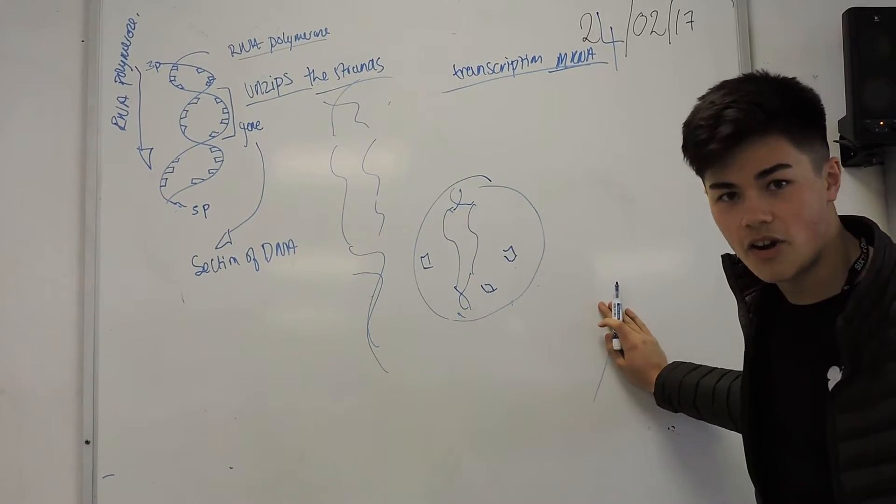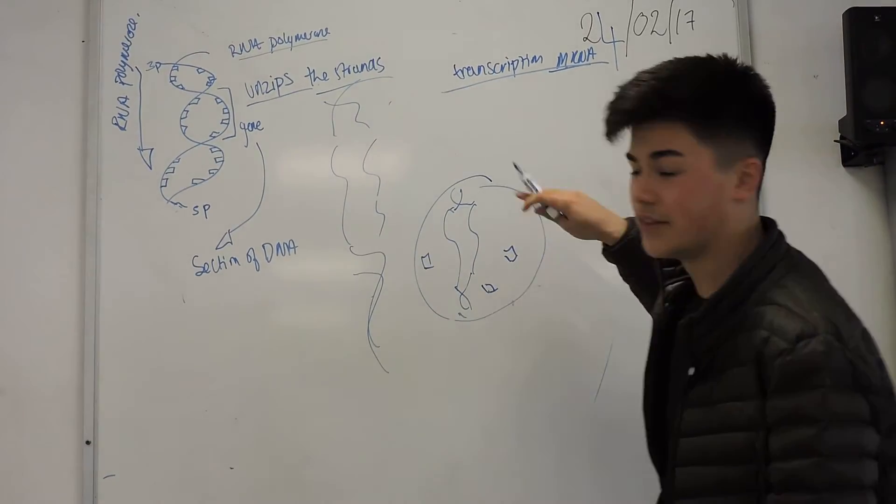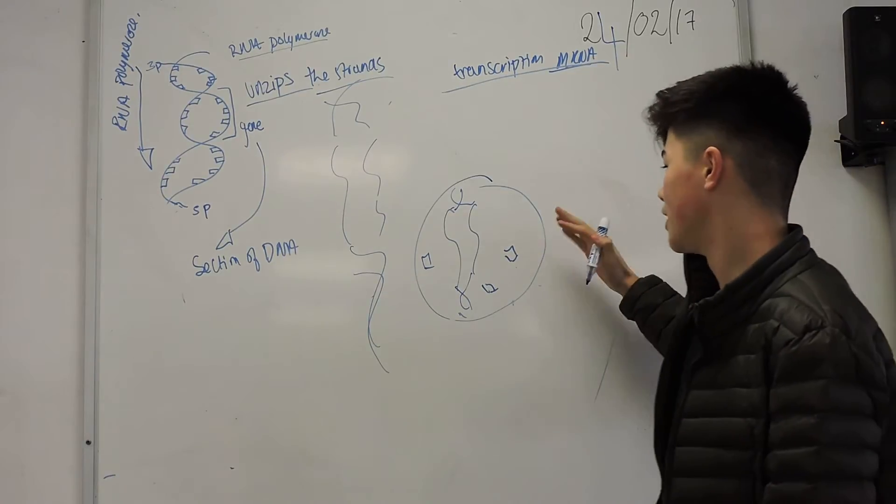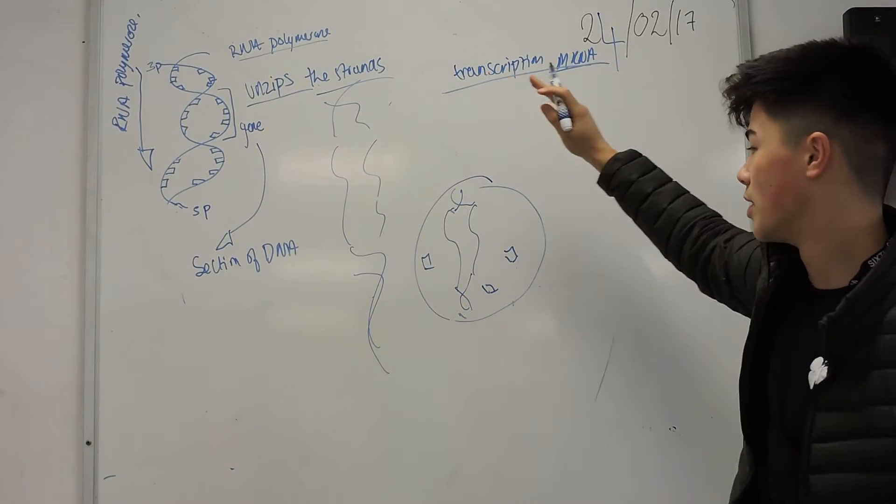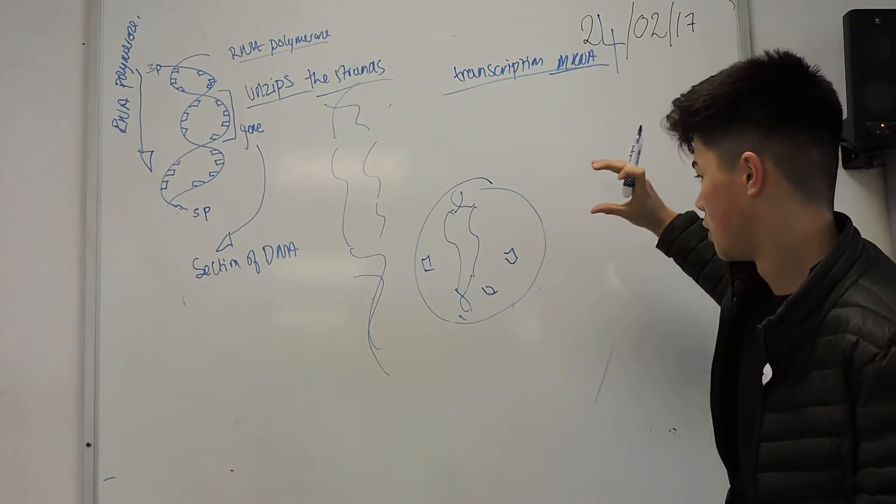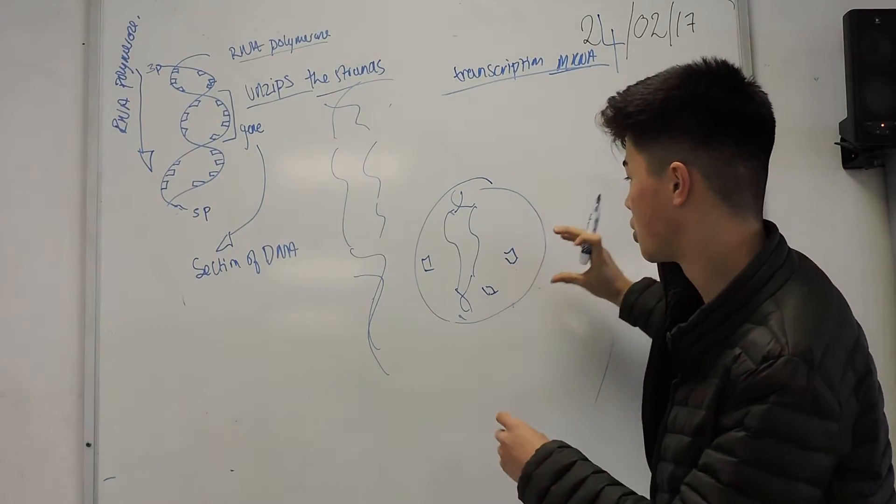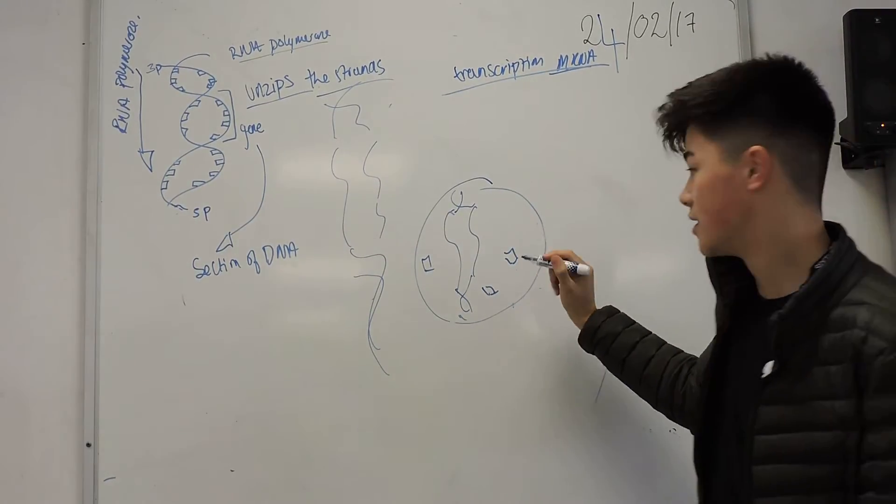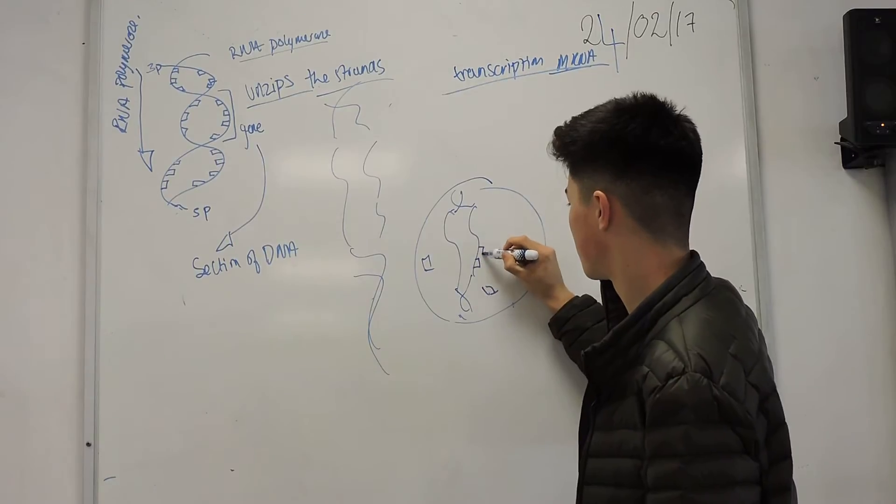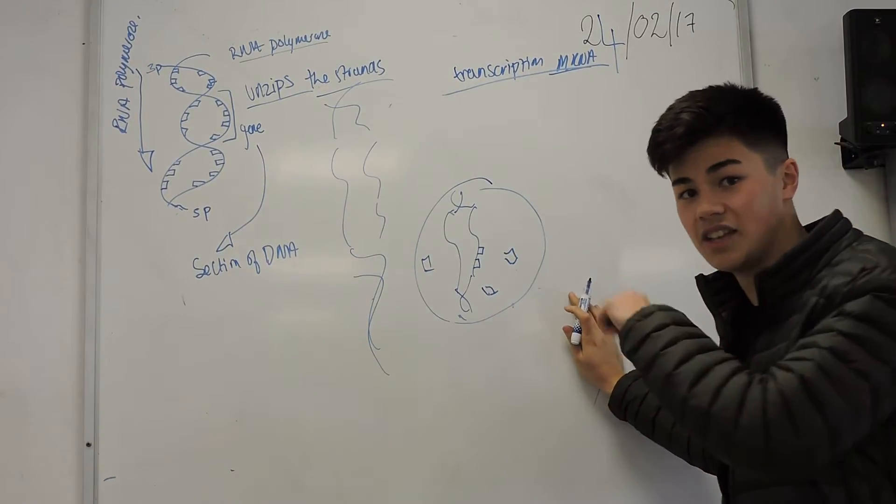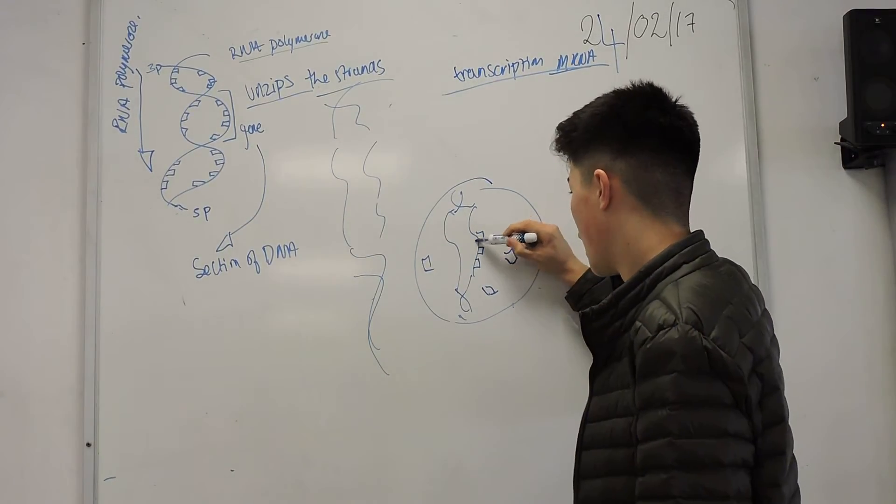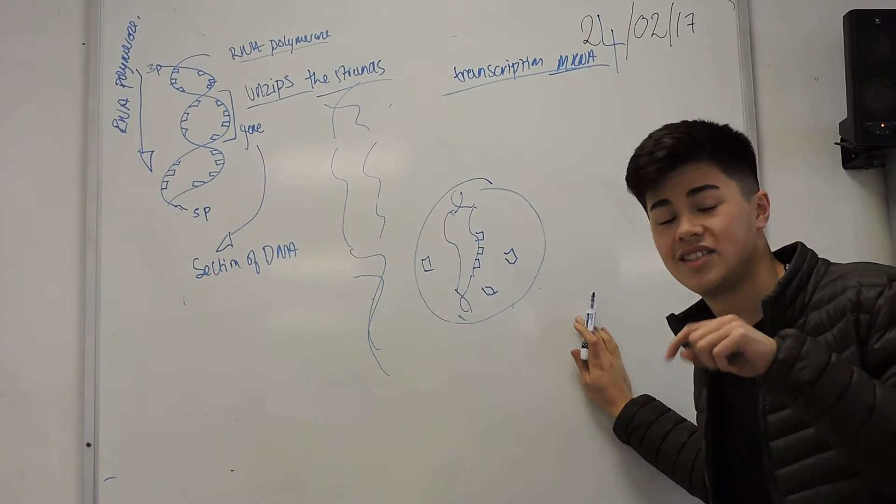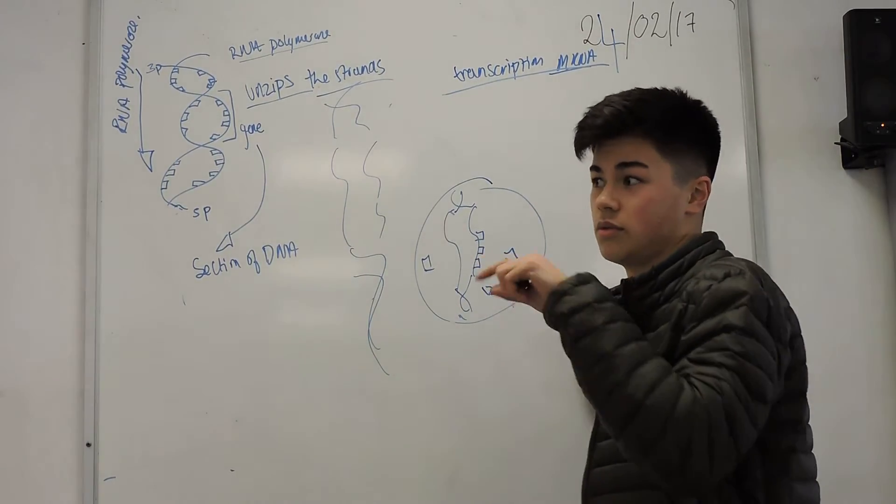There are RNA nucleotides floating around in the nucleus, and the RNA polymerase will attract them towards these DNA bases. The DNA bases are T, C, A, and G. In RNA, instead of T, it's U. So the RNA nucleotides are U, C, A, and G.